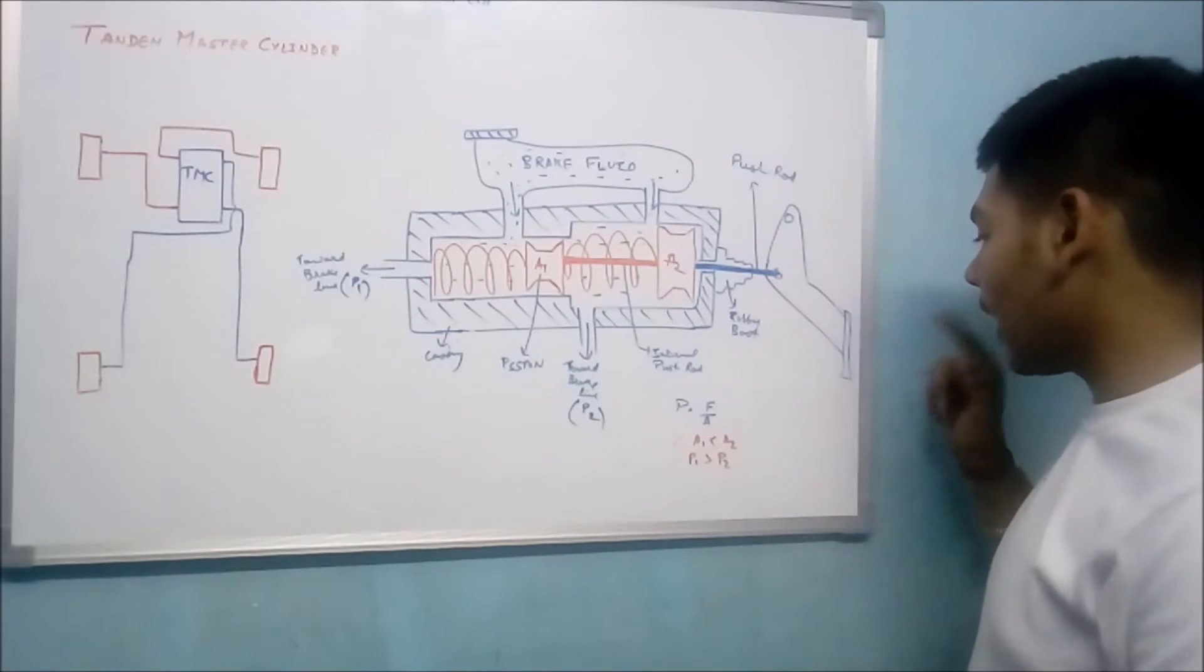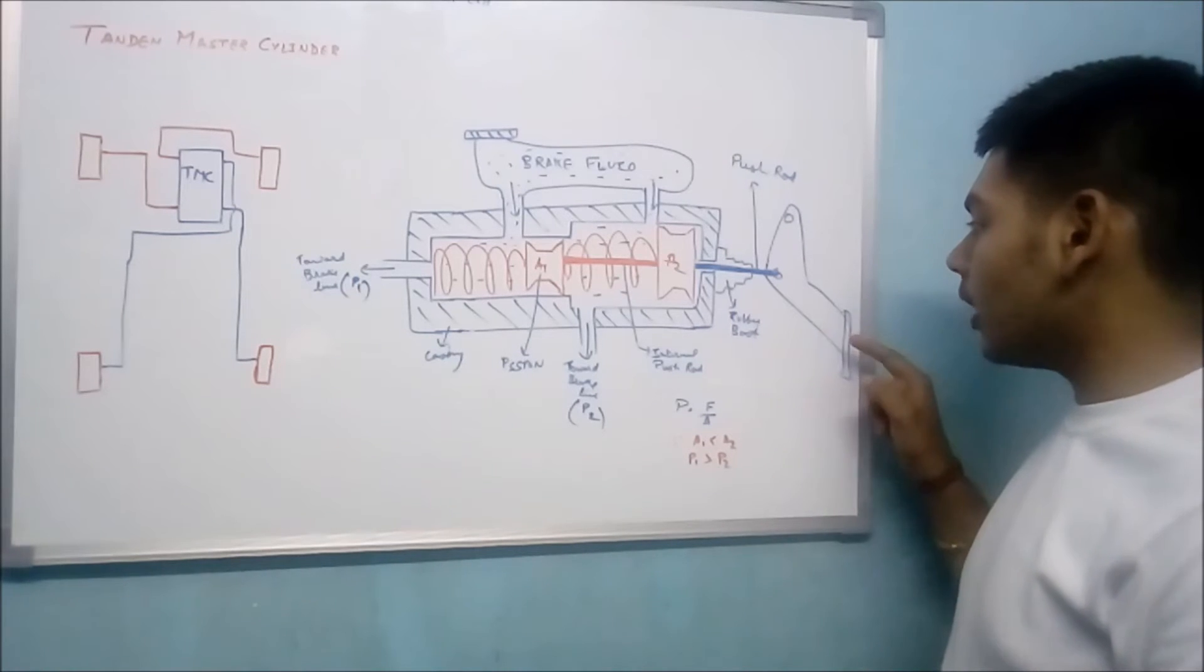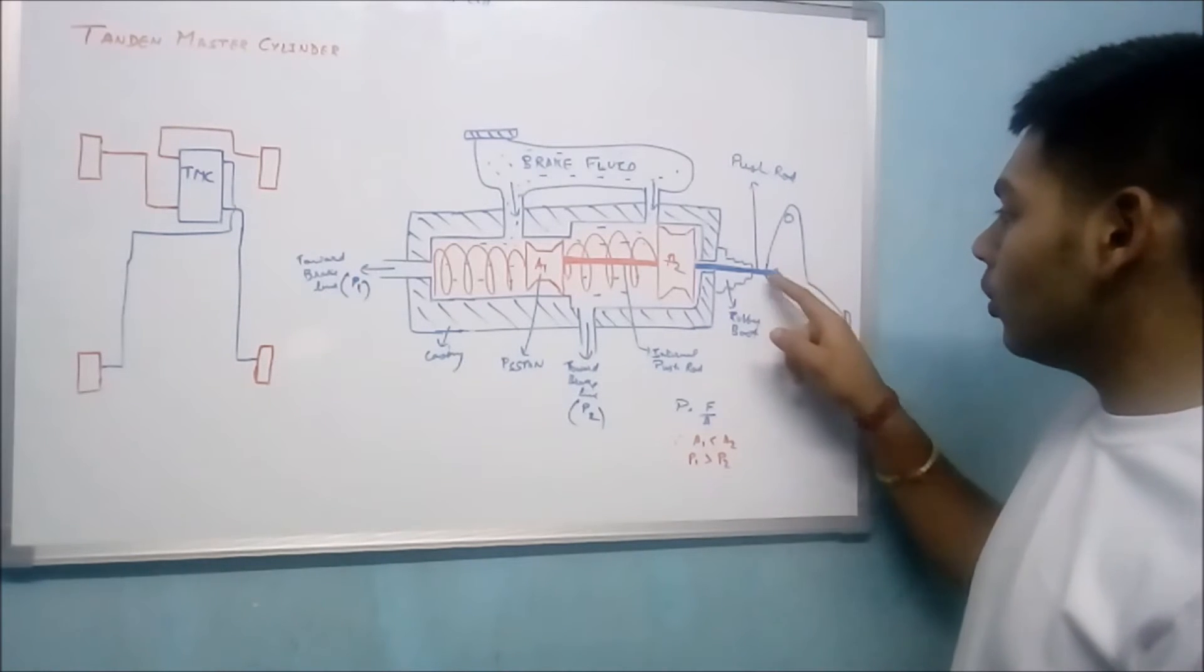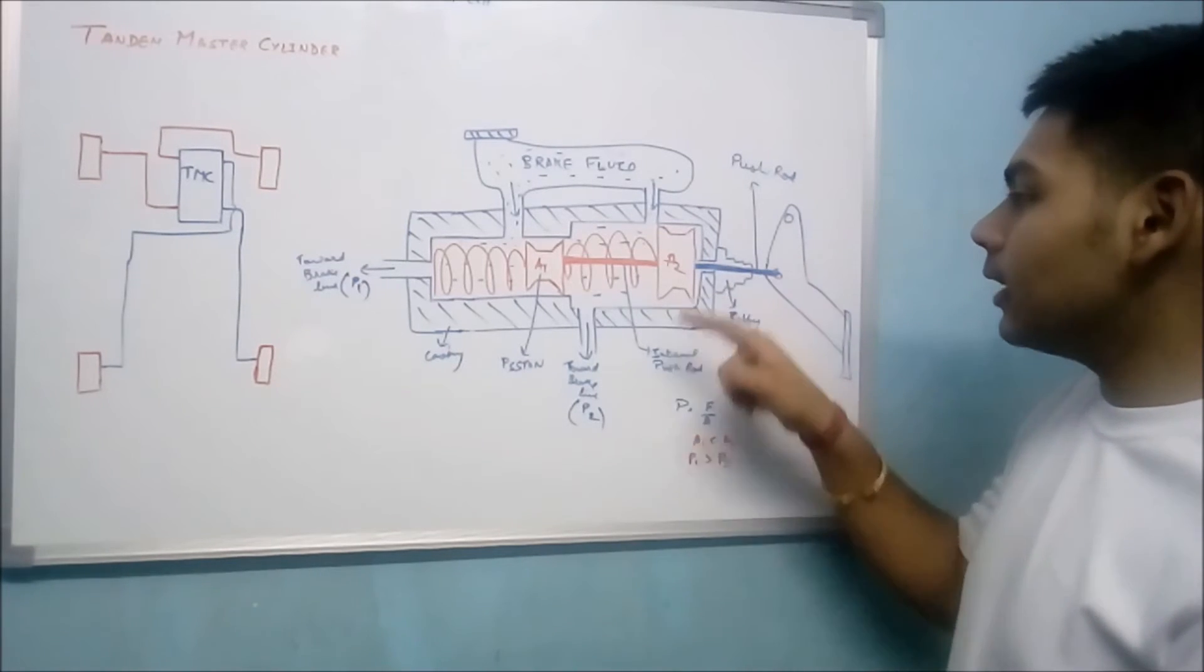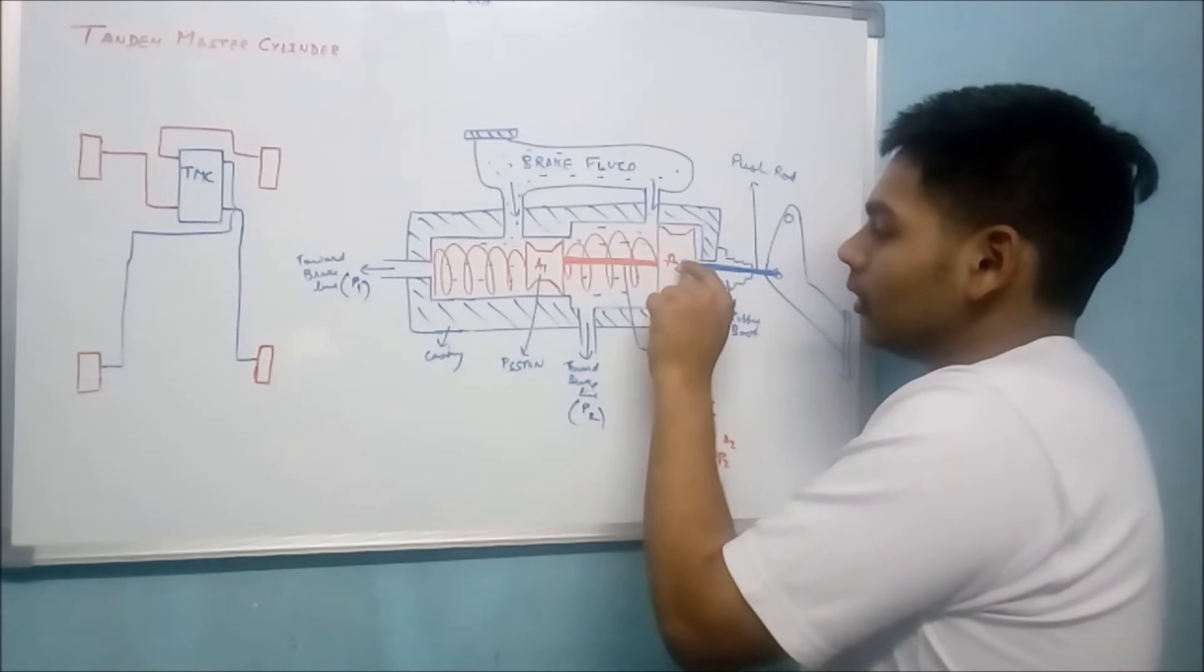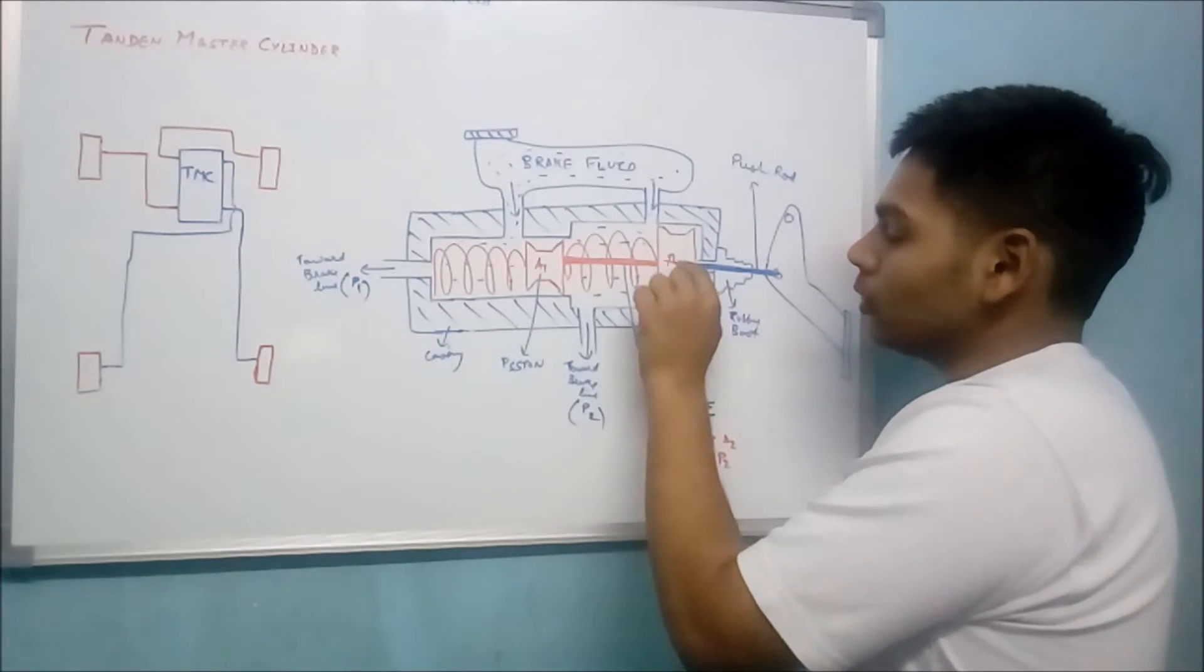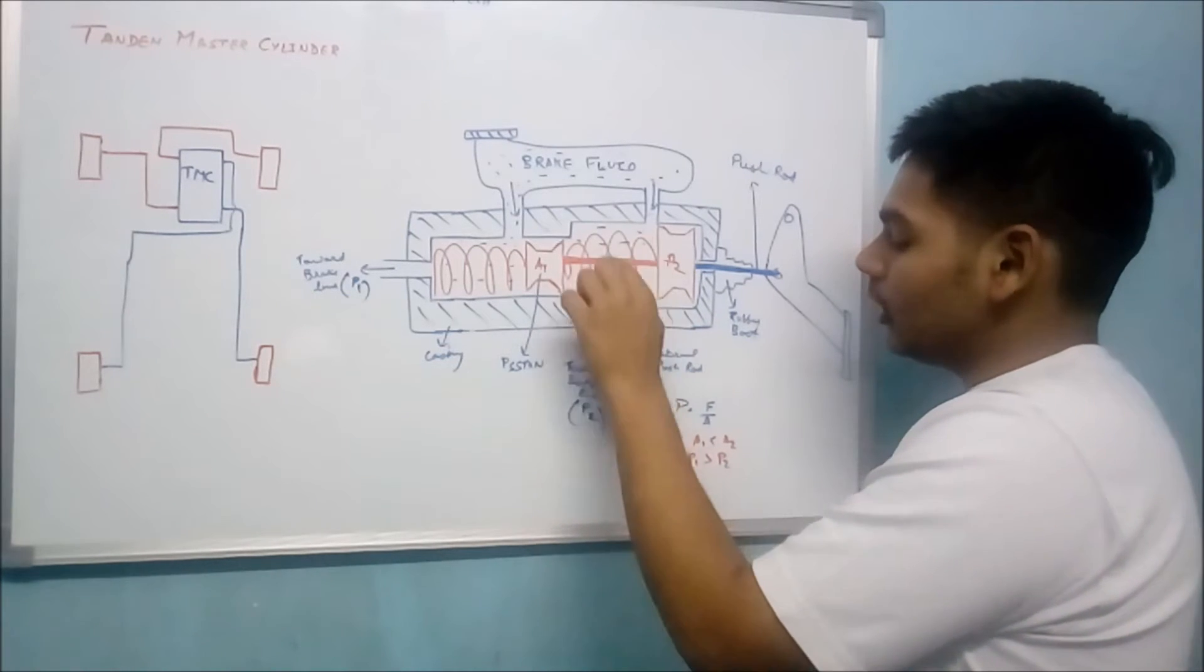When you apply mechanical force at this brake pedal, this mechanical force travels through the brake pedal to the push rod, then this force travels inside the tandem master cylinder. When this force is applied on this piston, the area of this piston is A2, so the pressure created inside this region will be equal to force upon area, that is area A2.